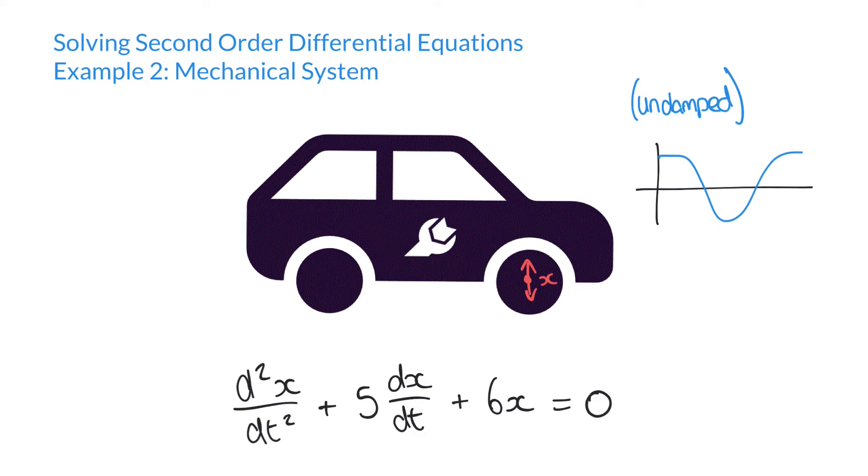We want an oscillation where an initial displacement will quickly return to an equilibrium point, and we're going to find that that's the case in this particular instance by solving this particular equation for x in terms of time t.